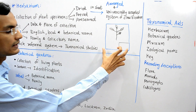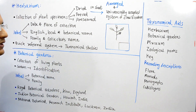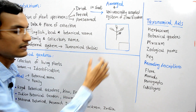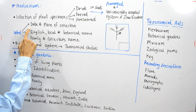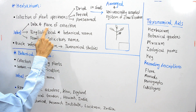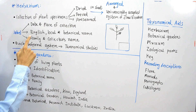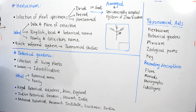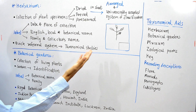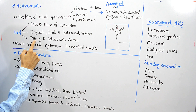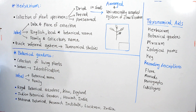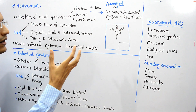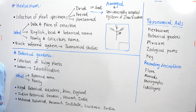This is the herbarium sheet, and one label is present on it. Let us see what information is mentioned on the label. The label contains the date and place of collection, then the English, local, and botanical name of that particular plant, the name of the family of that plant, and the collector's name.